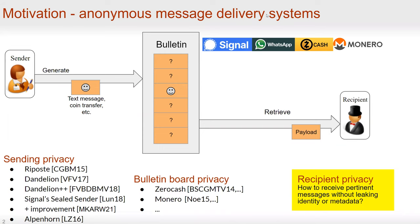Then the recipients want to retrieve the messages addressed to them. There have been lots of work studying sending privacy and bulletin board privacy, but how about recipient privacy? How can a recipient retrieve pertinent messages without leaking identity or metadata?